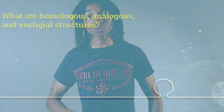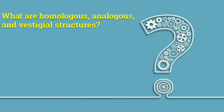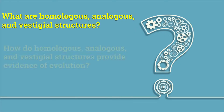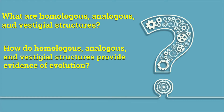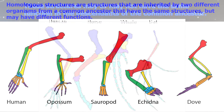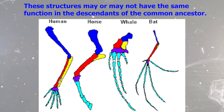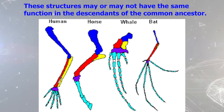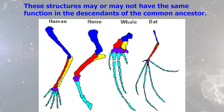Let's first answer the questions: what are homologous, analogous, and vestigial structures, and how do they provide evidence of evolution? Homologous structures are structures that are inherited by two different organisms from a common ancestor that have the same structures but different functions. These structures may or may not have the same function in the descendants of the common ancestor.